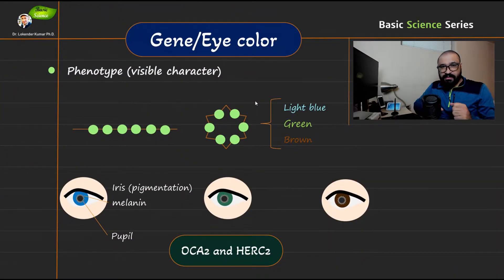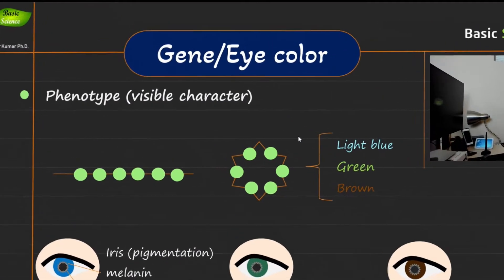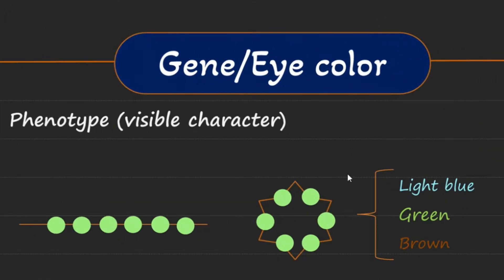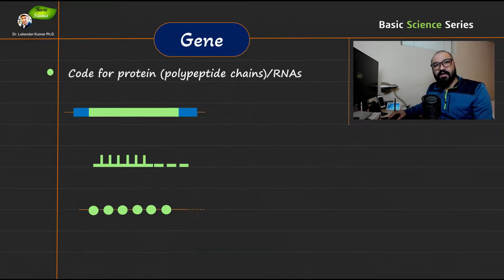Hi everyone, welcome to Basic Science Series. I'm your host Lakinder Kumar, and today we will be discussing the concept of gene in terms of human eye color. As you can see in this specific slide, I have designed these illustrations that explain the different types of eye color in case of humans.